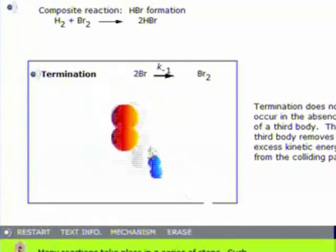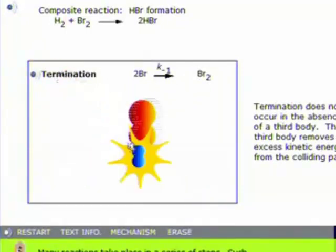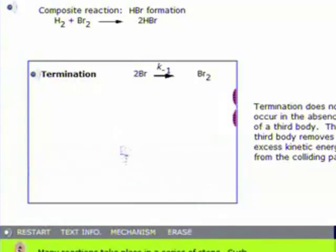Then you have termination when there's a third party collision. An example of what happens is when those come together, they would usually fly apart. But if you have higher concentration and you've got H2 present or some other molecule present, it can come along and carry away the excess energy.